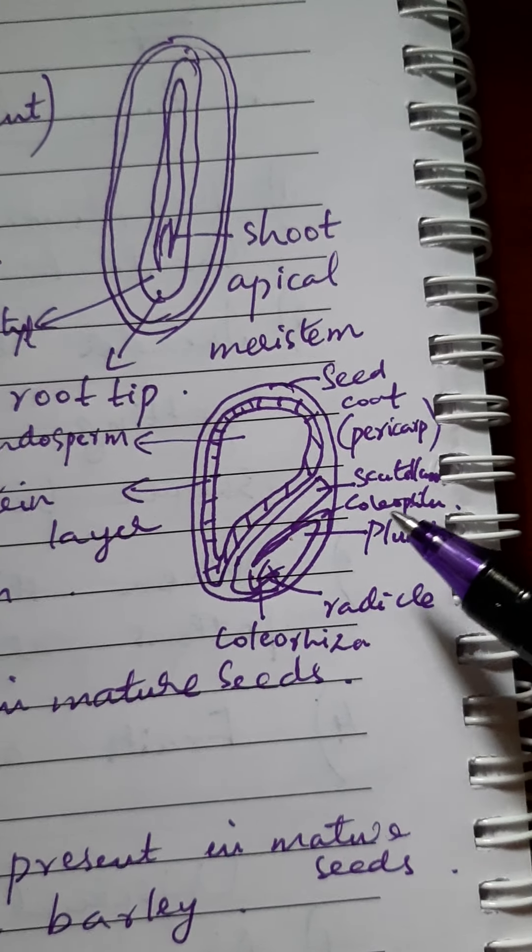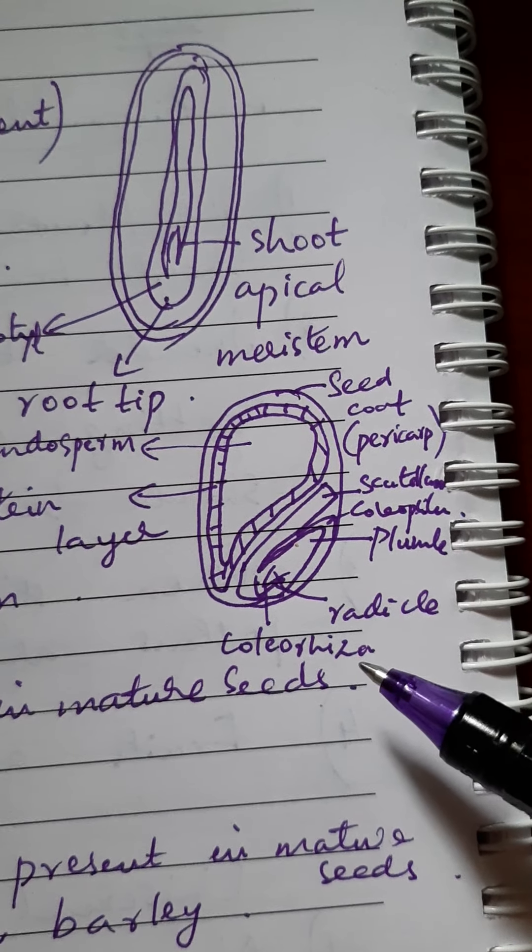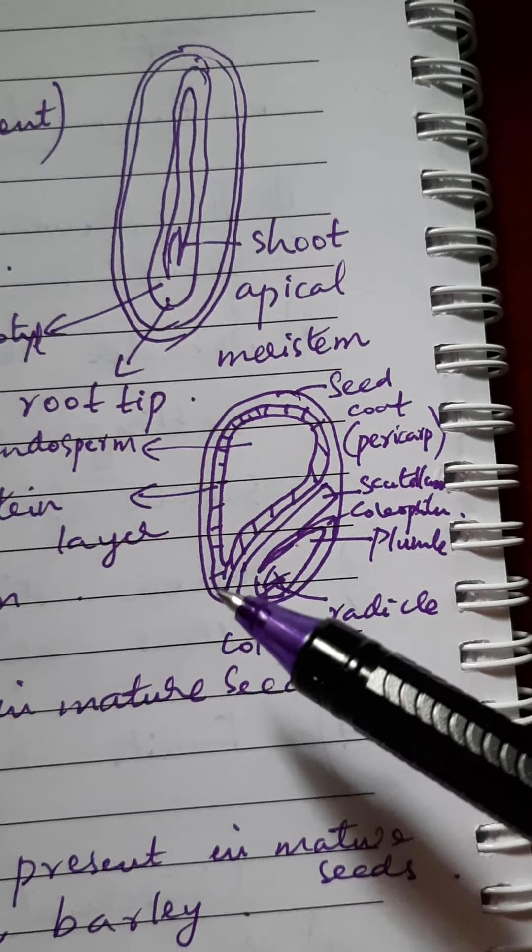Plumule is protected by coleoptile and radicle is protected by coleorhiza. What layer you see here is a protein layer, aleuron layer.